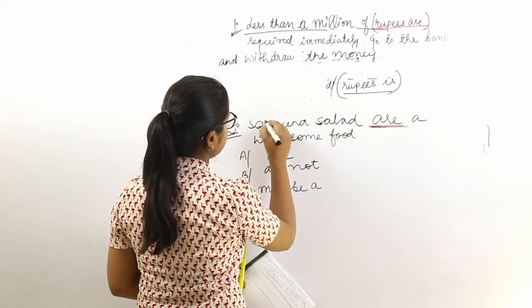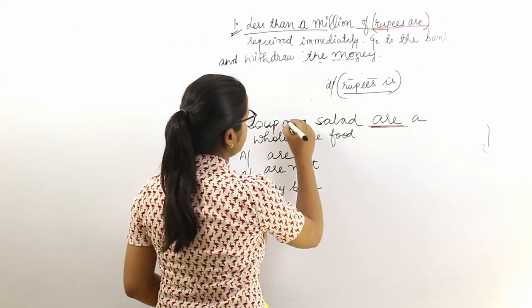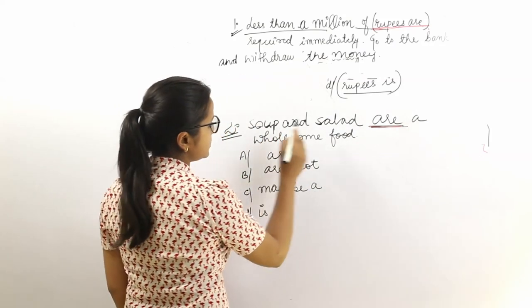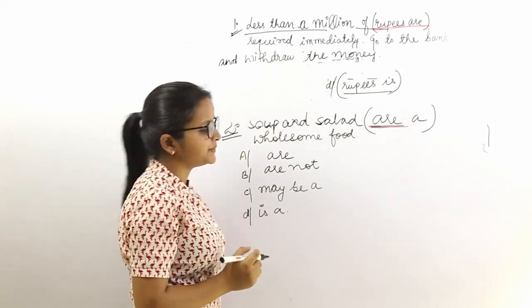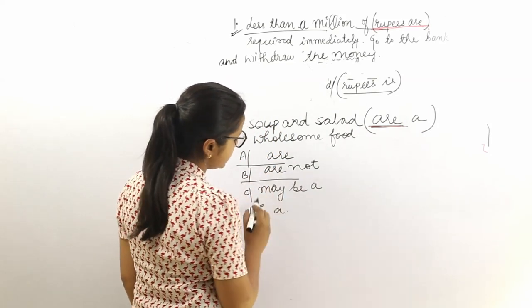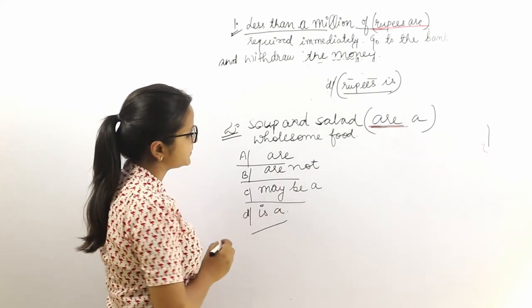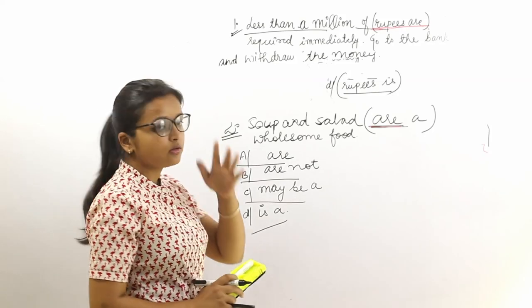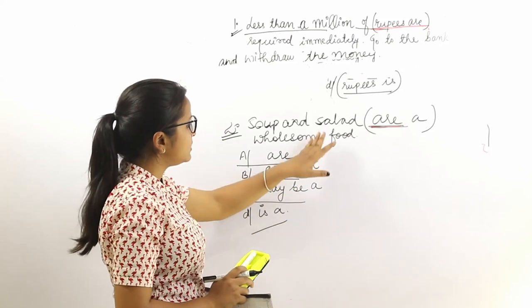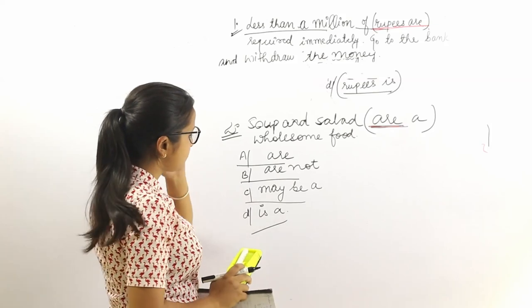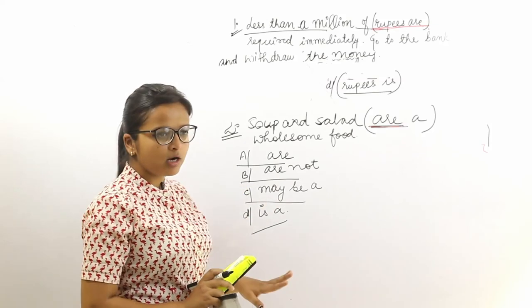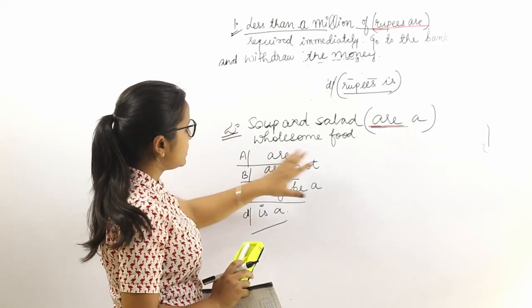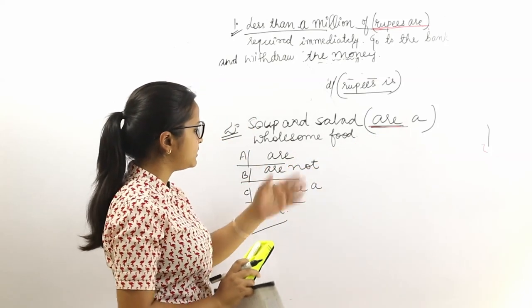The second sentence is: 'Soup and salad are a wholesome food.' The options are: are are, are not, may be a, and is a. If we are talking about soup and salad, we already have 'are' in the sentence, so 'are are' is redundant. 'Are not' is eliminated because the facts cannot be changed. 'May be' is eliminated because we do not doubt that soup and salad are good for health.